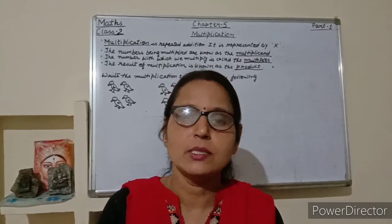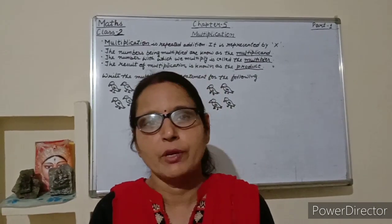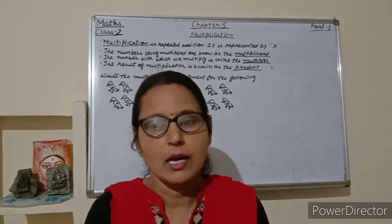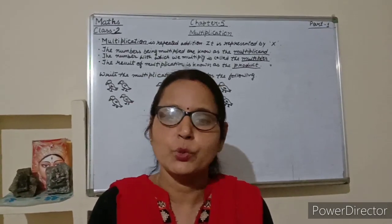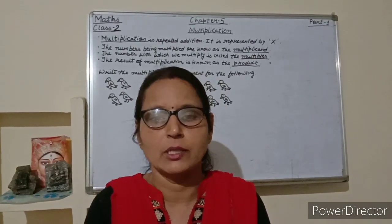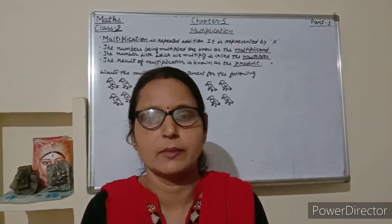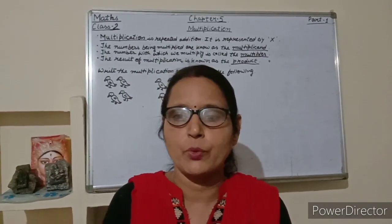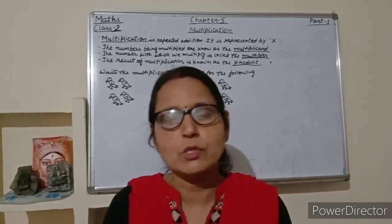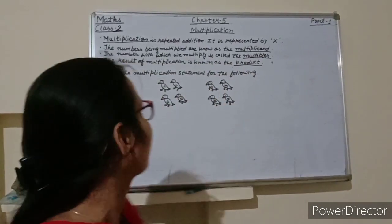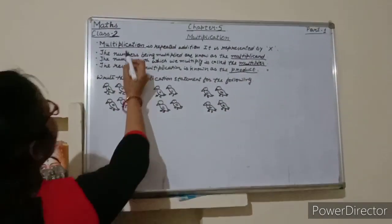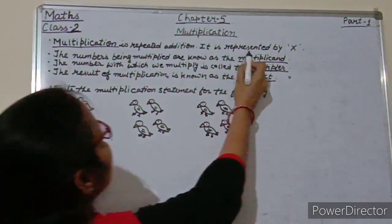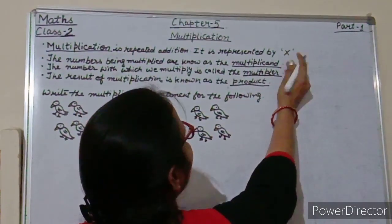In the iConnect section, we calculated the total number of items required to celebrate Ravi's birthday. We used the concept of multiplication to find the number of items. Now we are going to learn more about multiplication. Multiplication is repeated addition, represented by this sign.